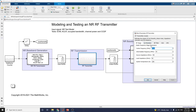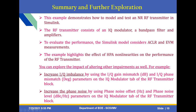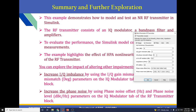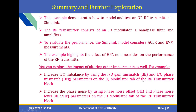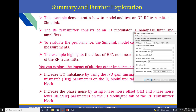You can explore further consideration for the IQ modulator. You can see the IQ gain mismatch value and IQ phase mismatch in degrees and change these parameters. You can explore the impact of altering other impairments as well. In the IQ modulator block, increase IQ imbalance by using IQ gain mismatch and IQ phase mismatch. You can also vary these parameters. Additionally, you can increase phase noise using phase noise offset and phase noise level in the IQ modulator block.